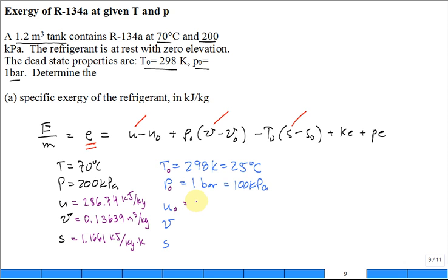For the dead state temperature at 298, dead state pressure at 1 bar, you look up the dead state internal energy—that's equal to 250.61 kilojoules per kilogram. And the dead state specific volume, 0.2378 meters cubed per kilogram. And the dead state entropy, 1.0975 kilojoules per kilogram Kelvin.